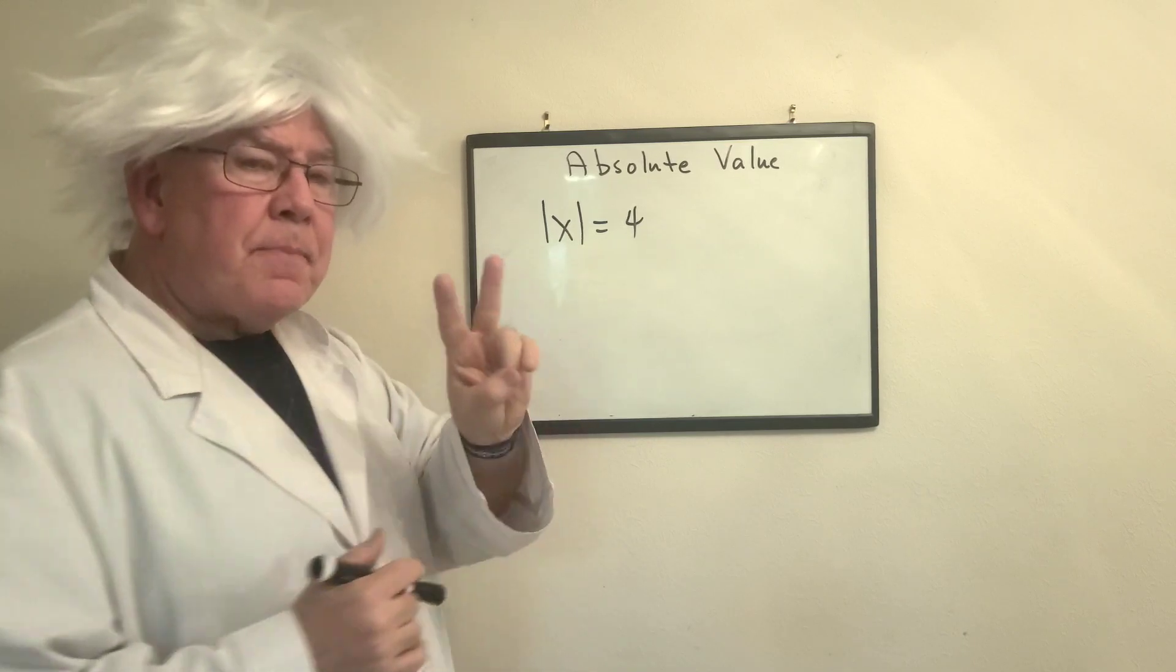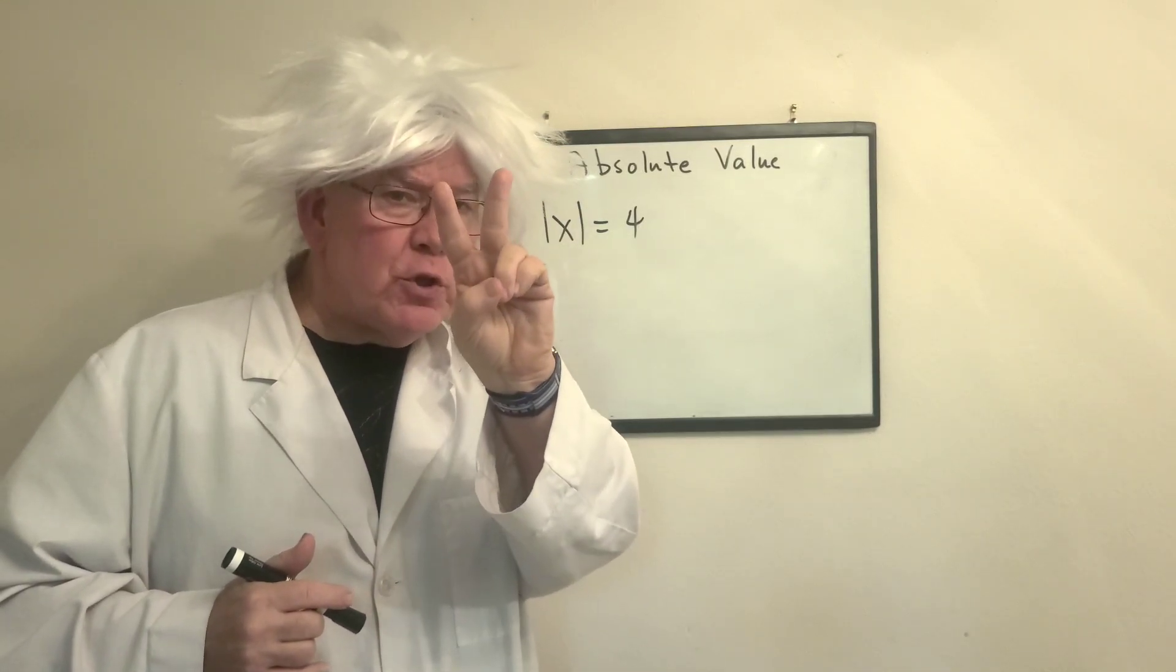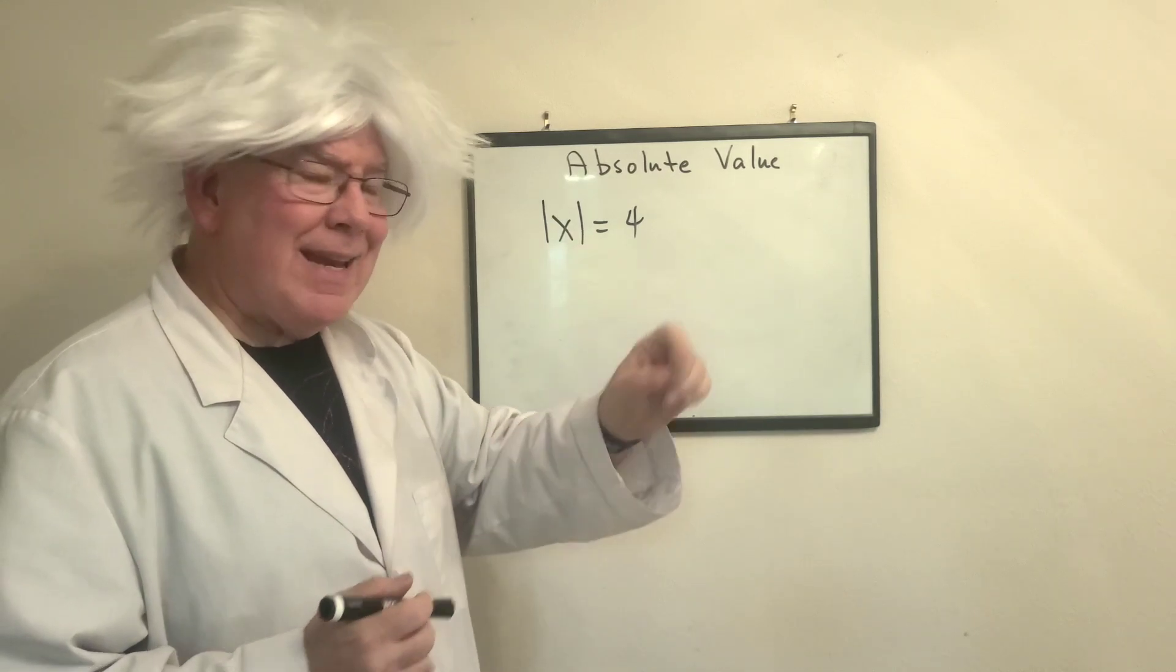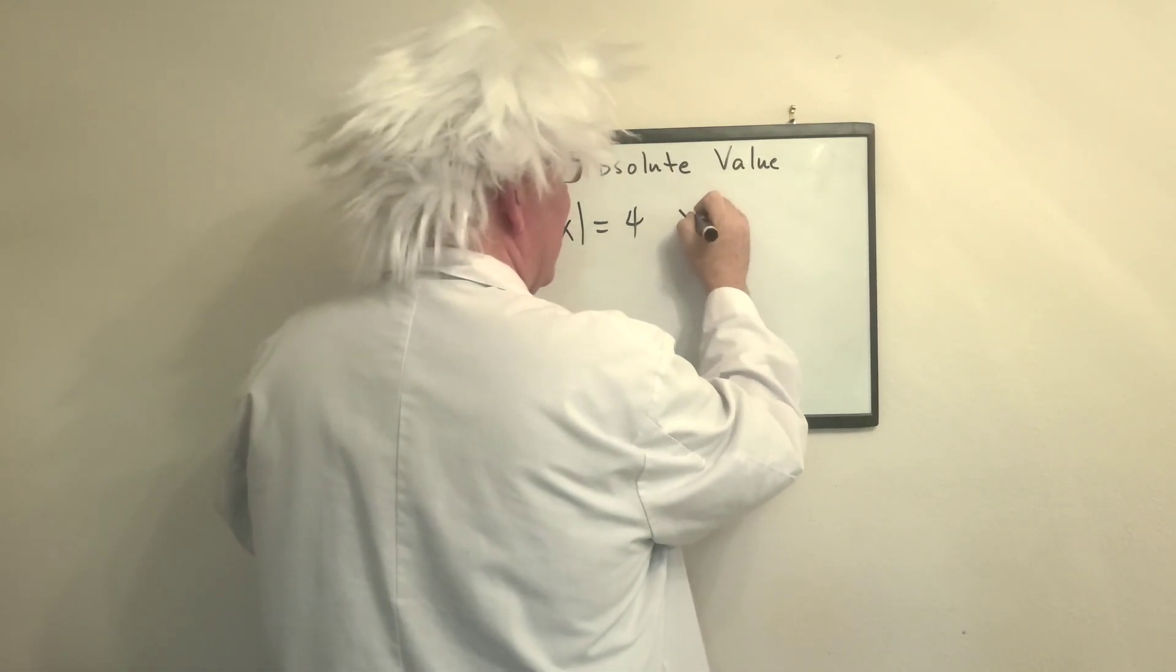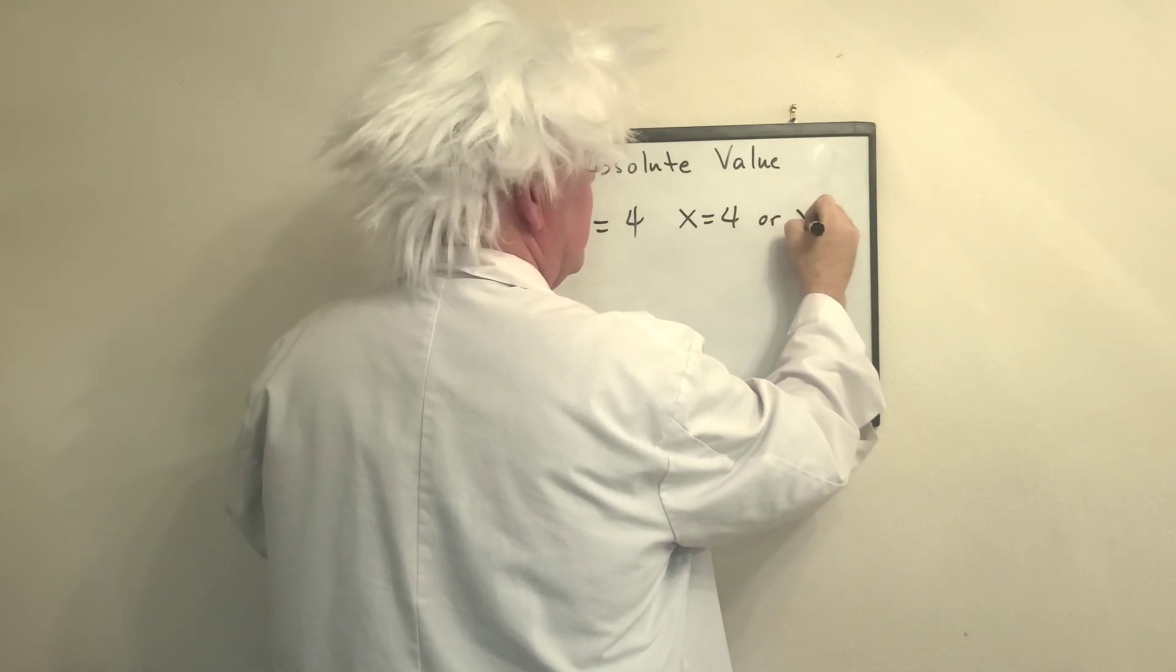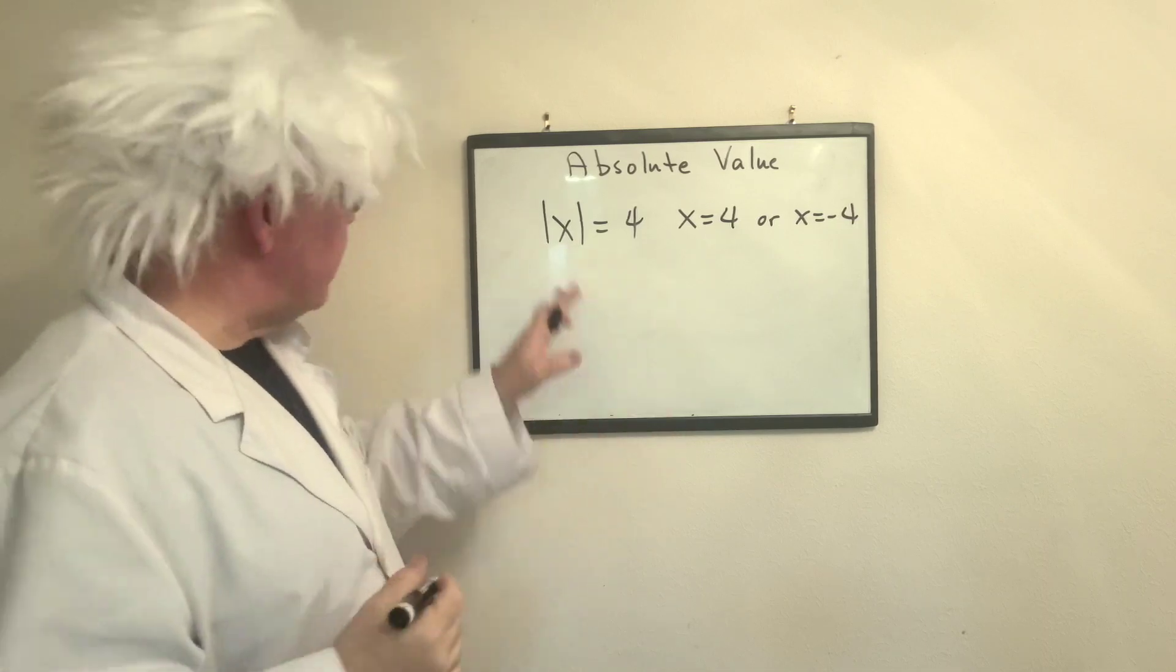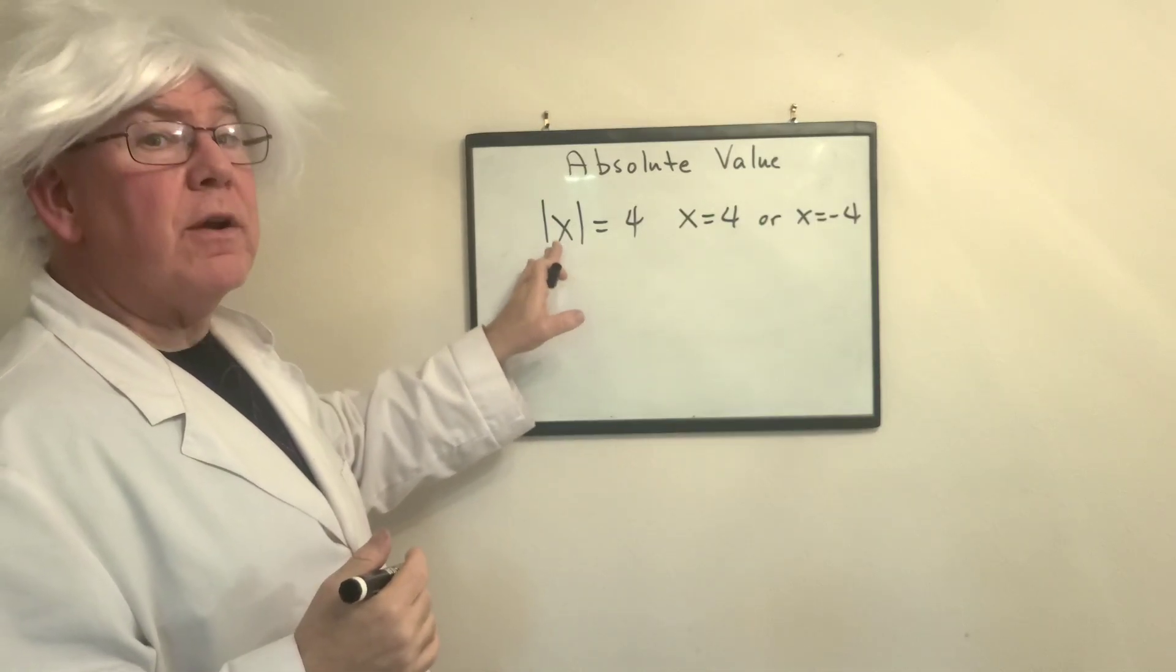To say this, an absolute value equation will always have two answers. You got to remember that you have a positive answer and a negative answer. So this is going to be x equals 4 or x equals negative 4. So on a number line, you got both of them because if I put negative 4 in here, it also works.